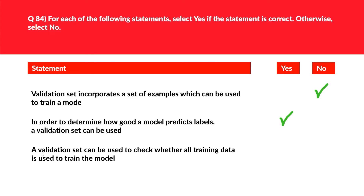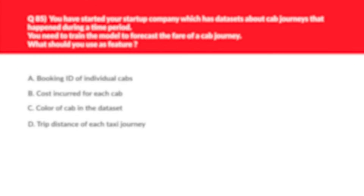Statement 3 says a validation set can be used to check whether all training data is used to train the model. A validation set cannot test if all the training split of the dataset has been used to train the model, as it's out of scope. So the answer is no. We'll log this as the correct answer.